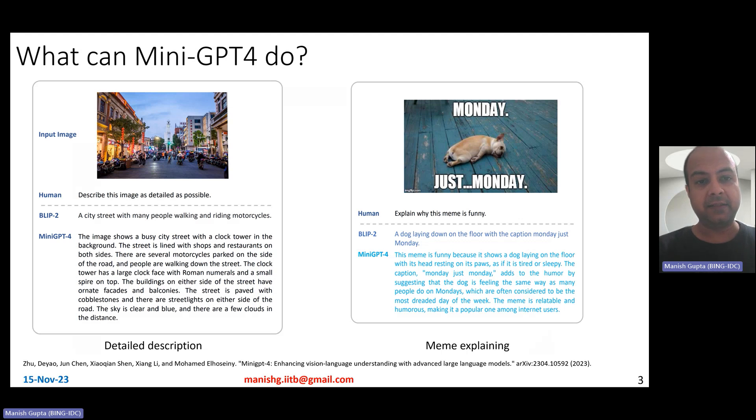For example, it can take an image and then describe deep details. If you look at a competitor model called Blip, it just gives you small little details. I mean, it just says people walking and riding motorcycles, but if you look at this stuff here, it comes up with nice interesting things like busy city streets, several motorcycles, people walking down the road, motorcycles are parked on the side of the road, and buildings on either side of the street with ornate facades and balconies. The street is paved with cobblestones and so on. Very, very interesting details.